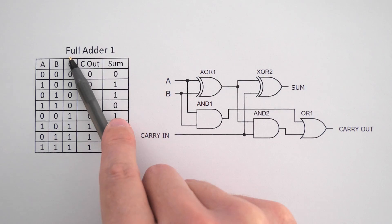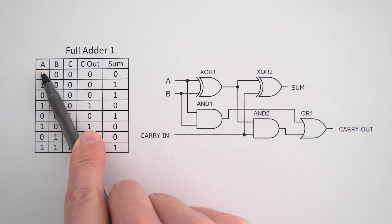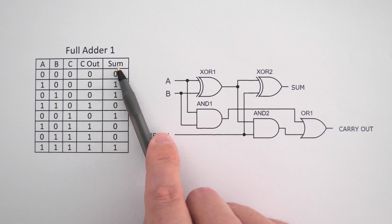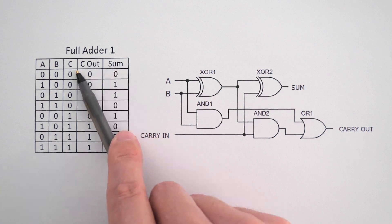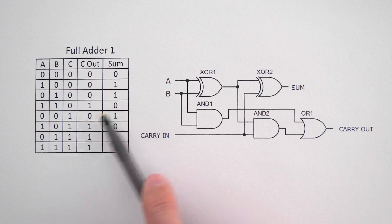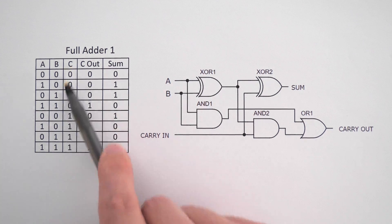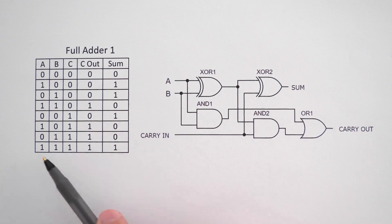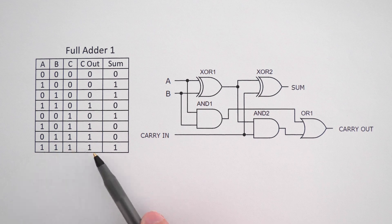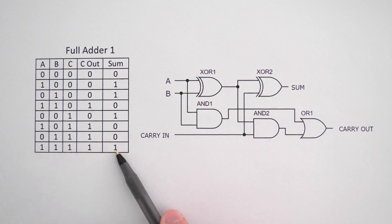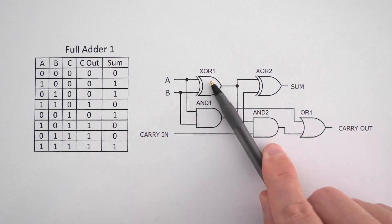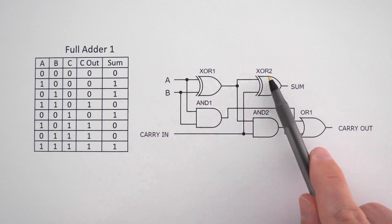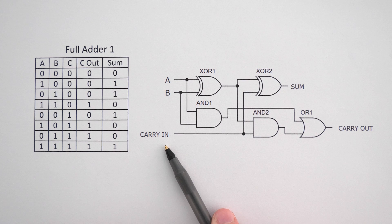Now we're going to talk about how to build a full adder. We have inputs A, B, and carry in, and the outputs are carry out and sum. The first four cases are the same as before, but now we're going to add four more cases for whenever the carry in is turned on. We'll be able to add up to 3 — so 1 plus 1 plus 1 equals 3, which is 1, 1 in binary. We have exclusive OR gate 1 and AND gate 1, the same as in the half adder, but now we need to add more logic gates to account for the carry in.